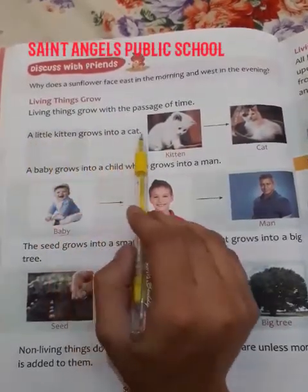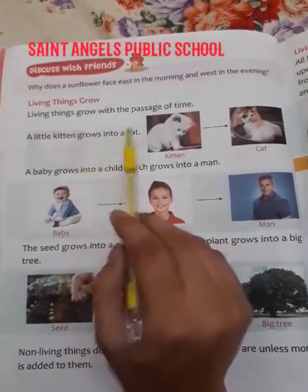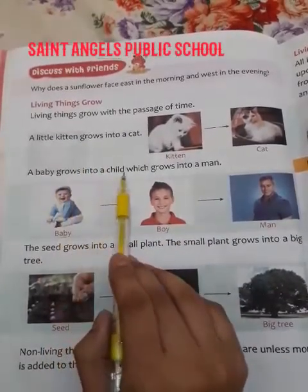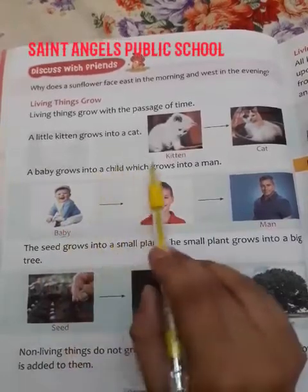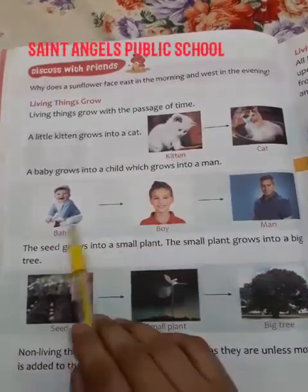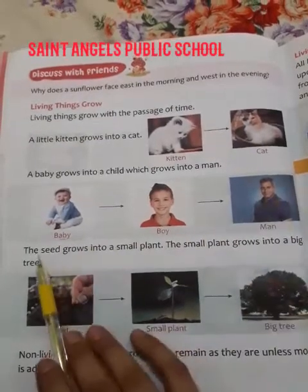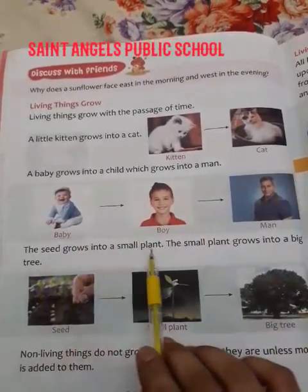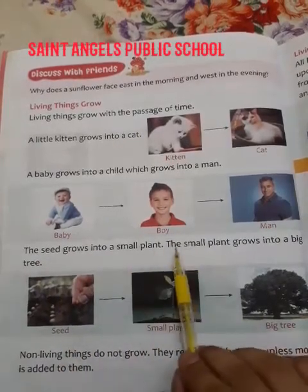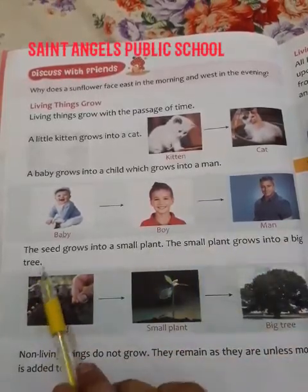A little kitten grows into a cat — kitten means billi ka bachcha. Ek little kitten ek cat mein grow hota hai. A baby grows into a child — ek baby ek child mein grow hota hai — which grows into a man. Baby pehle ek child ya boy mein grow hota hai, phir wo bade hokar ek man mein grow hota hai. The seed grows into a small plant — ek seed ek chote podhe mein grow hota hai. The small plant grows into a big tree — ek small plant ek bade vrksh mein grow hota hai.